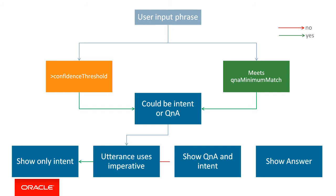If an imperative verb is not detected, the bot will present both options to the user. There is, however, one other check where both intent and Q&A are possibilities, and this is controlled by the dialogue flow property Q&A skip if intent found. If this is set to true, then in the case of an input resolving to both an intent and a Q&A, the intent always wins — or saying it a different way, Q&A is ignored.